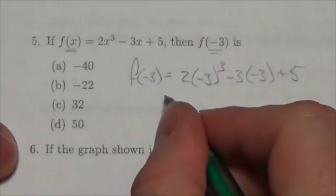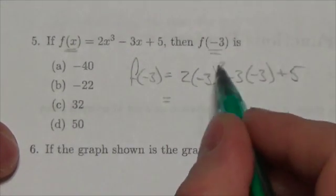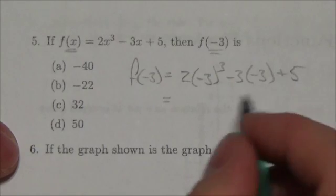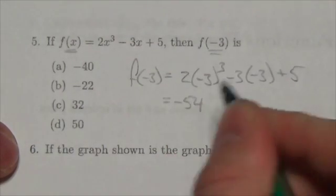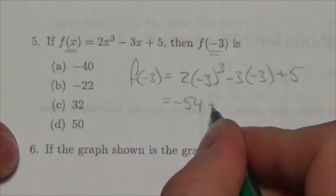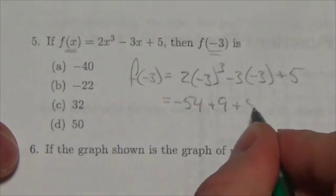And now I just need to evaluate that. Well, negative 3 cubed is going to be negative 27 times 2 will be negative 54. Negative negative 3 will be positive 9. And then we've got the plus 5.